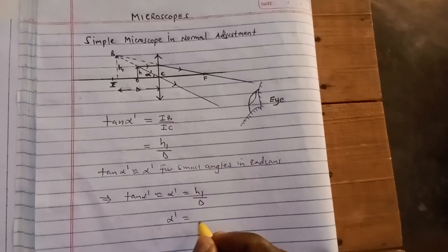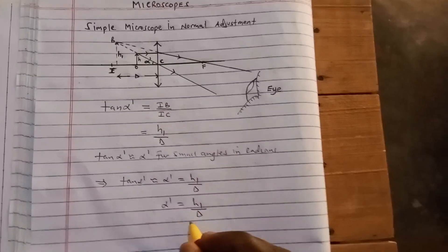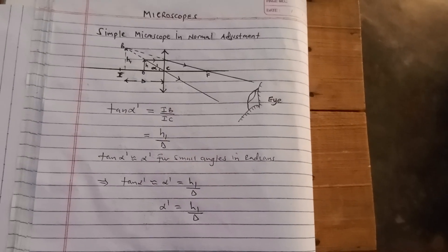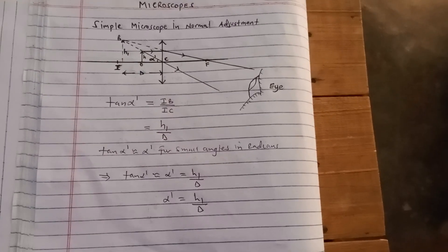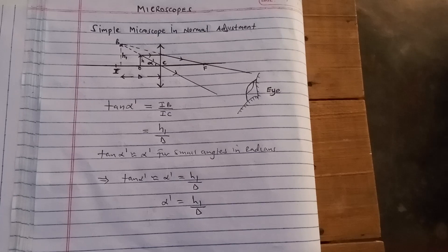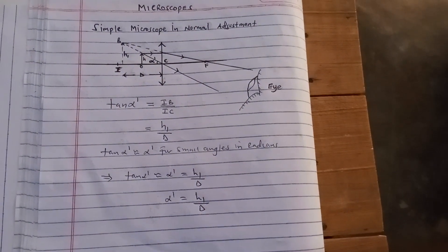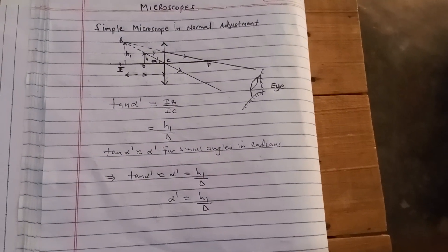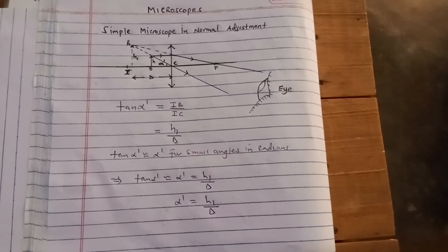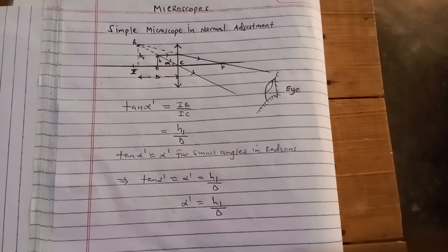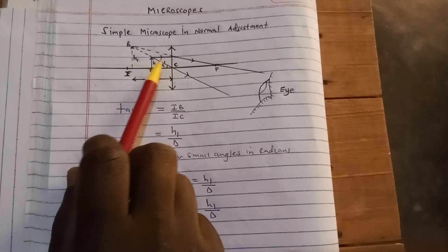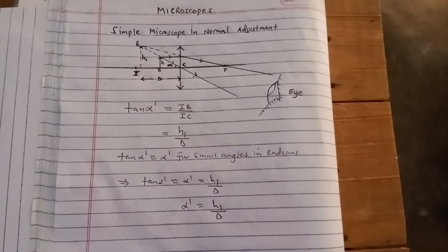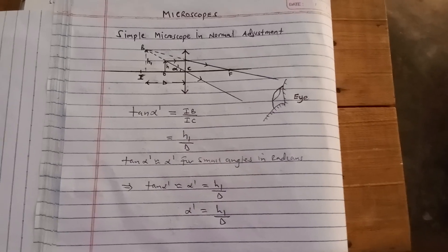That result comes from triangle IBC. Now, recall that angular magnification is the ratio of the angle subtended at the eye by the final image when the instrument is being used, to the angle subtended at the eye by the object when the instrument is not used. Alpha prime is the angle subtended at the eye when the instrument is being used. We now need the angle alpha — subtended at the eye when the instrument is not used — so we can form that ratio.